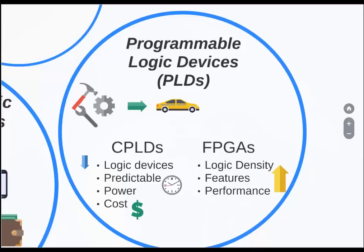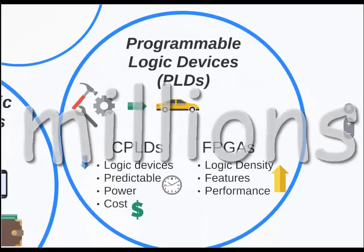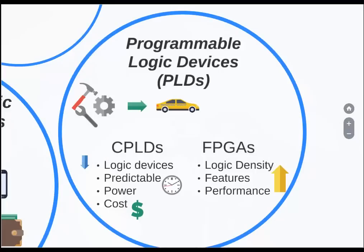PLDs can be further classified into CPLDs, complex programmable logic devices, and FPGAs, field programmable gate arrays. CPLDs have fewer logic devices, about 10,000 gates. They are very predictable in timing and can be used for critical applications. They have low power consumption and cost very cheap. On the other hand, FPGAs come with huge logic density, about millions of gates packed together, providing lots of features and faster performance. FPGAs are also used with ASIC designs for testing before conversion to ASICs.